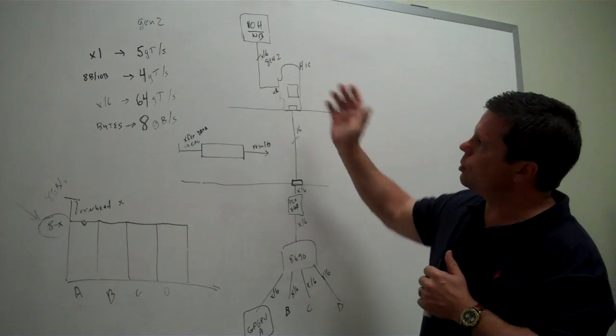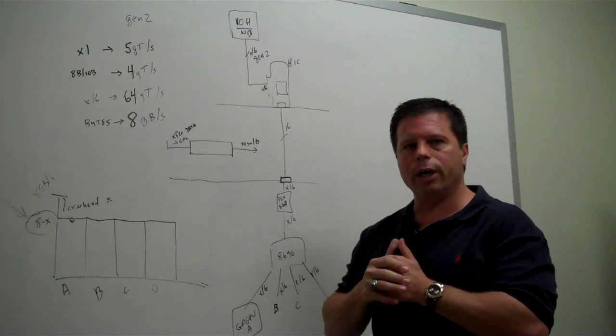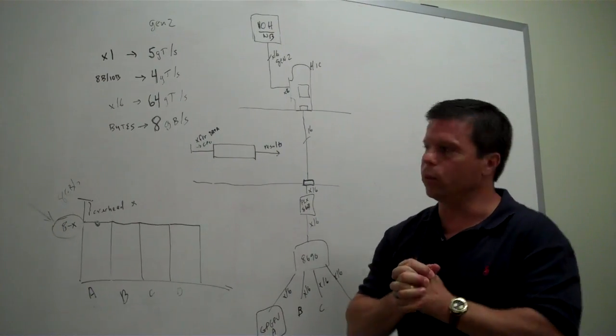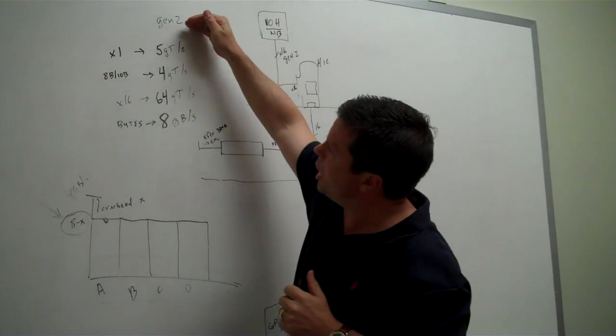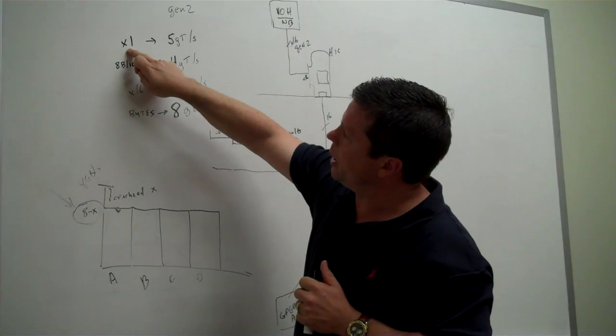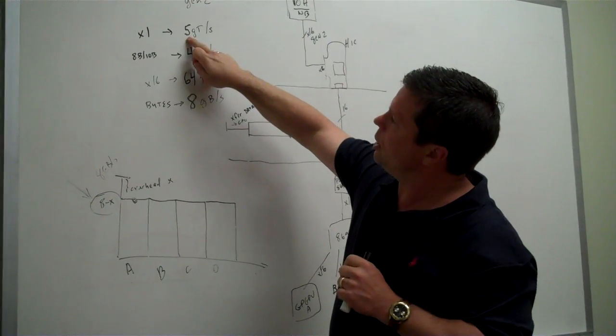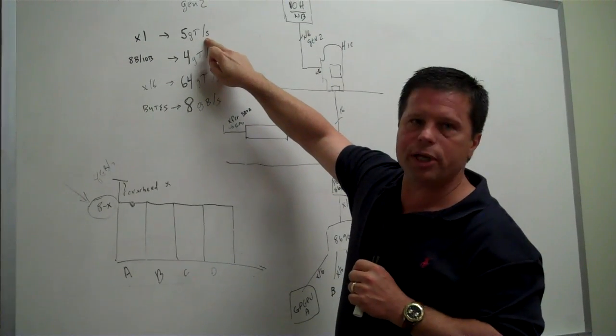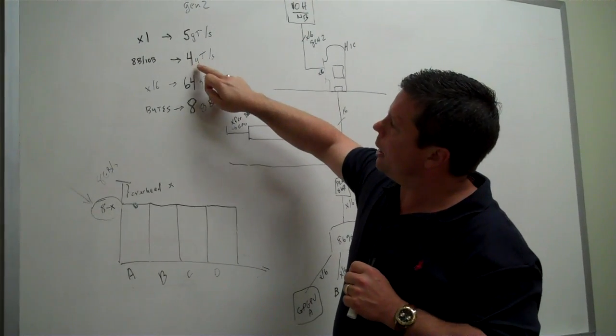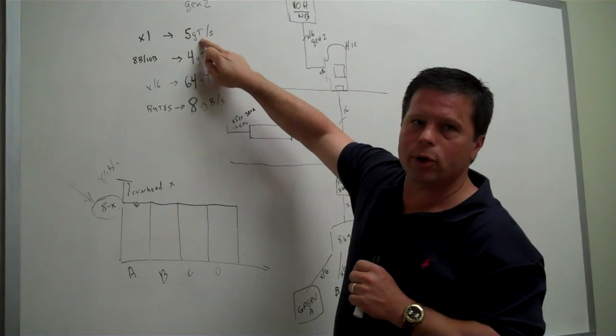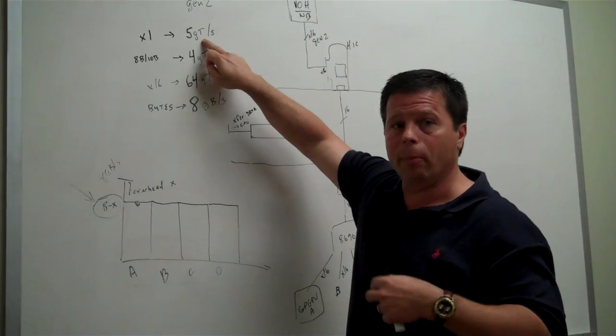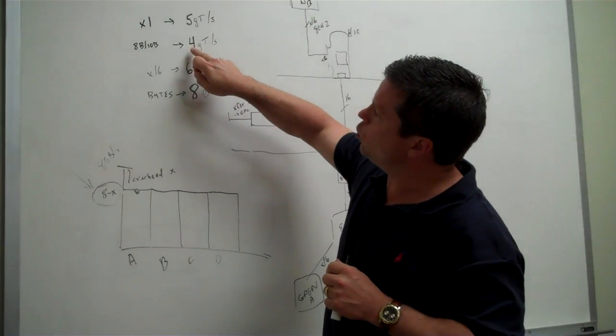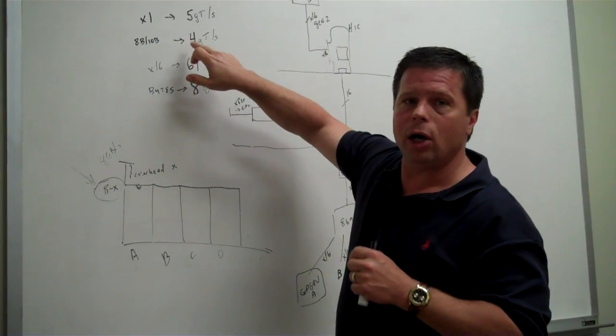So, let's do a little bit of theoretical calculation on what by 16 Gen 2 gives you from a data transfer bandwidth. Gen 2 on a single lane in a direction can clock at 5 gigatransfers per second. And the reason I say gigatransfers as opposed to something that's representative of a bit or a byte, in other words, a datum, is because to maintain the clocking on that link,